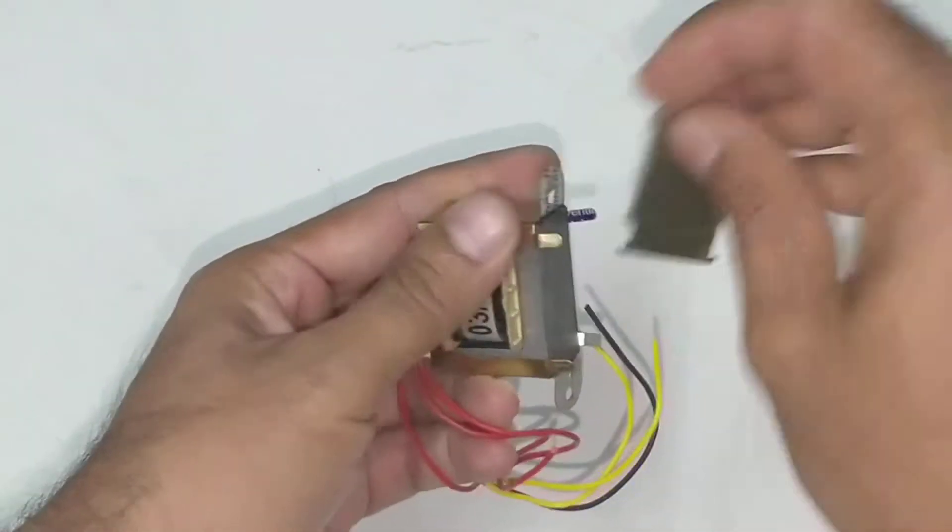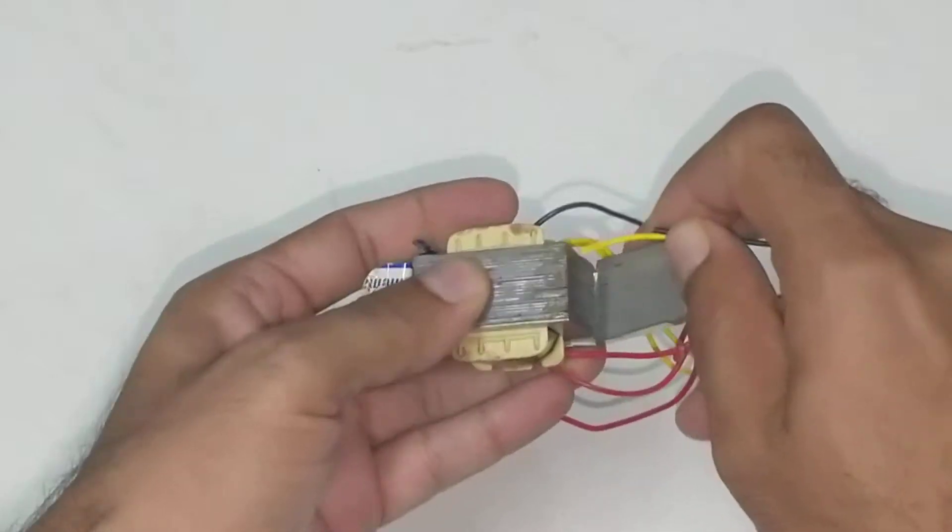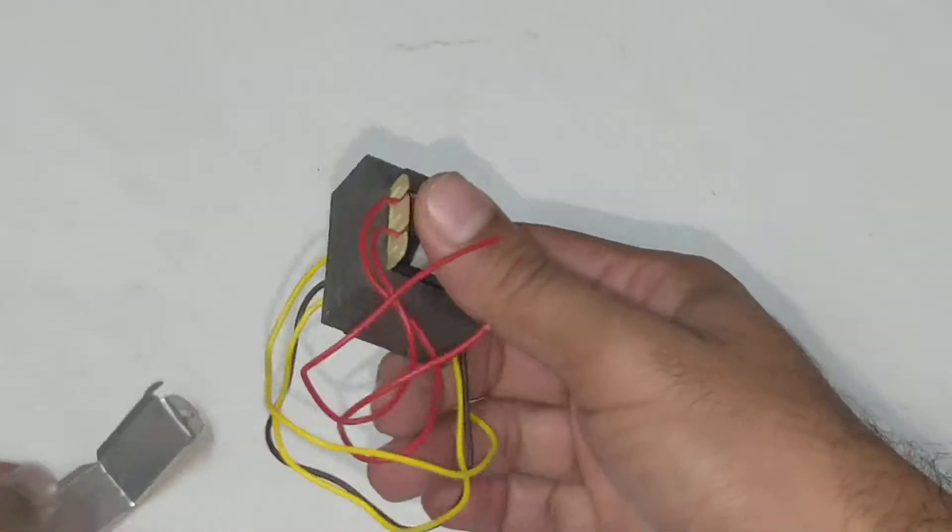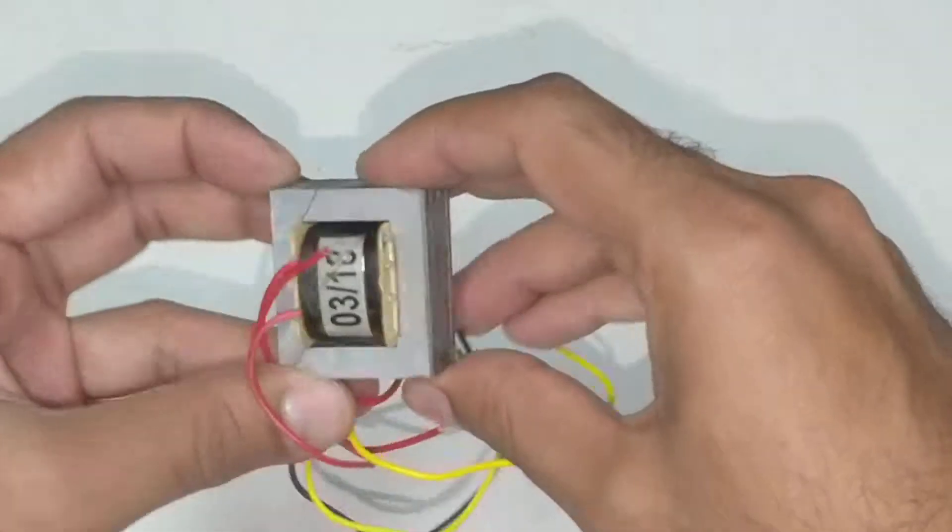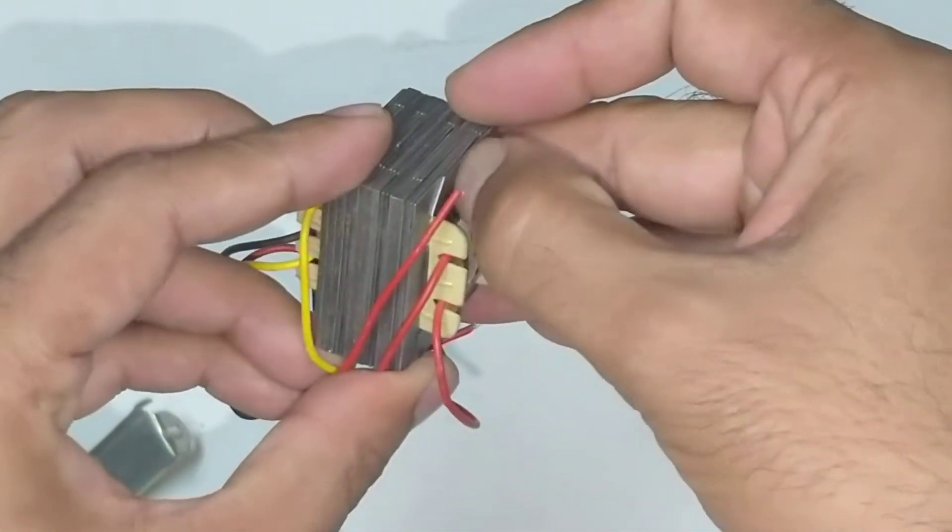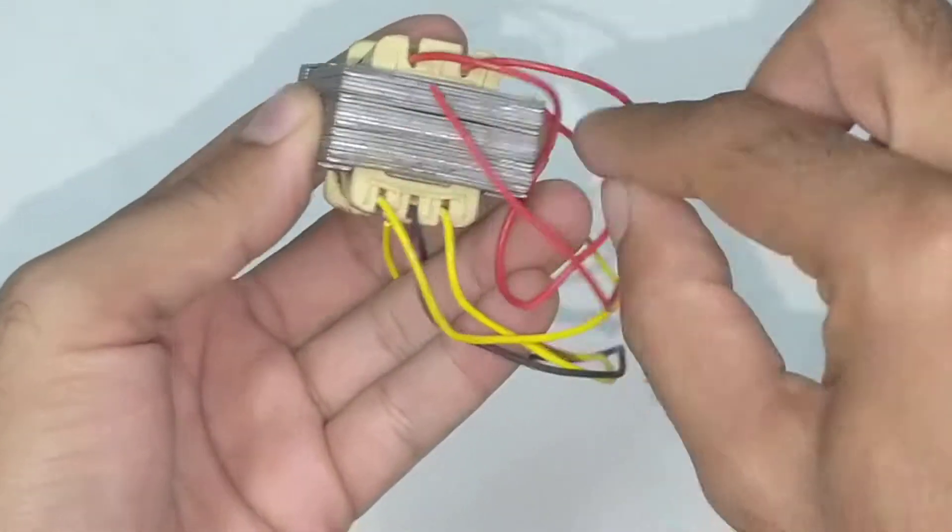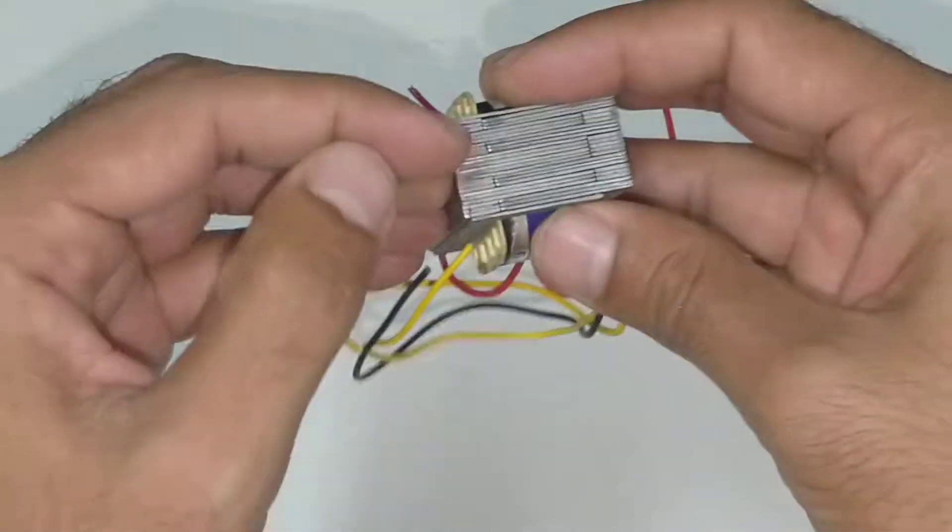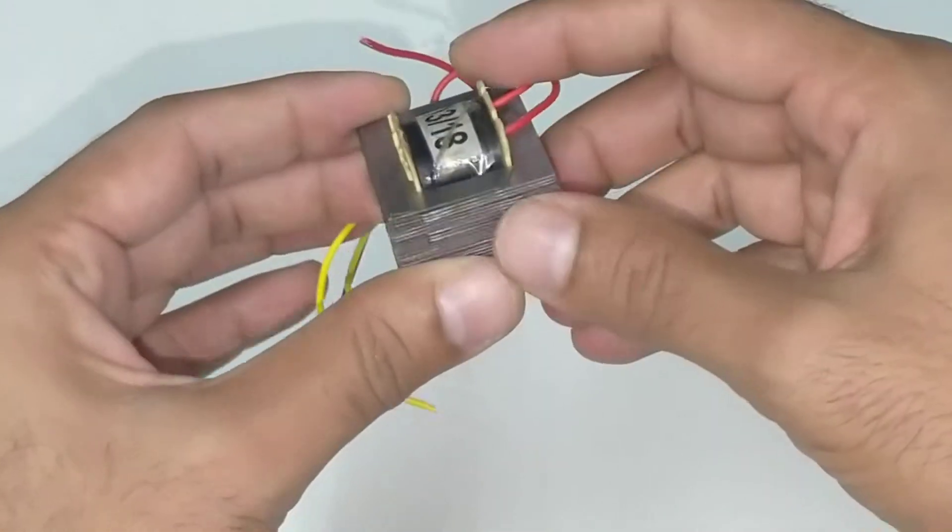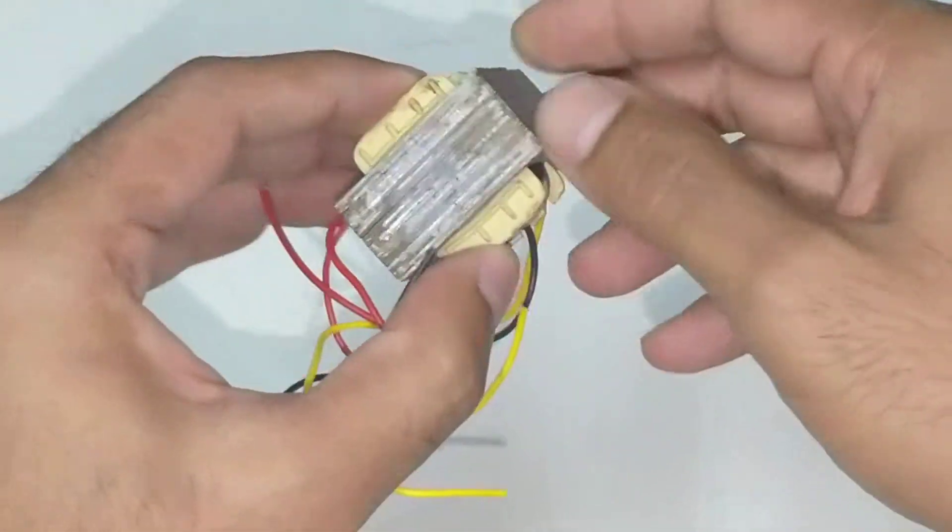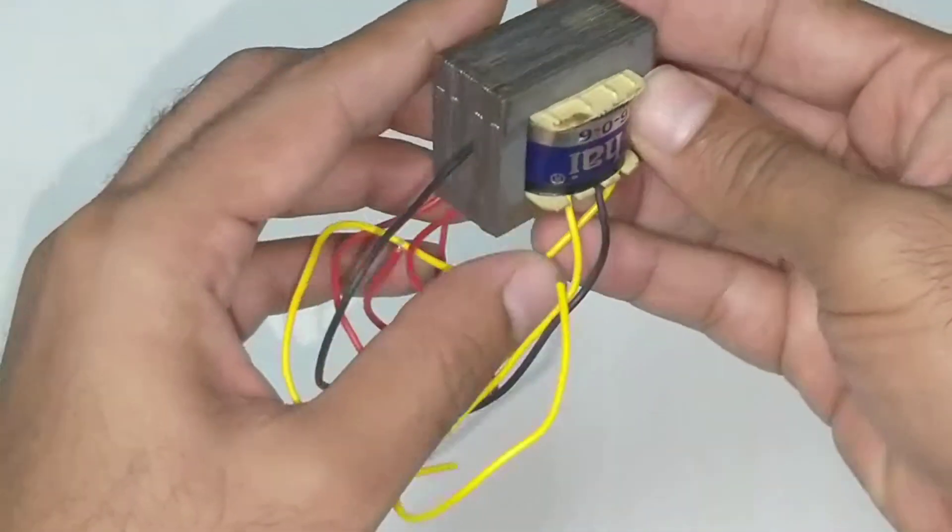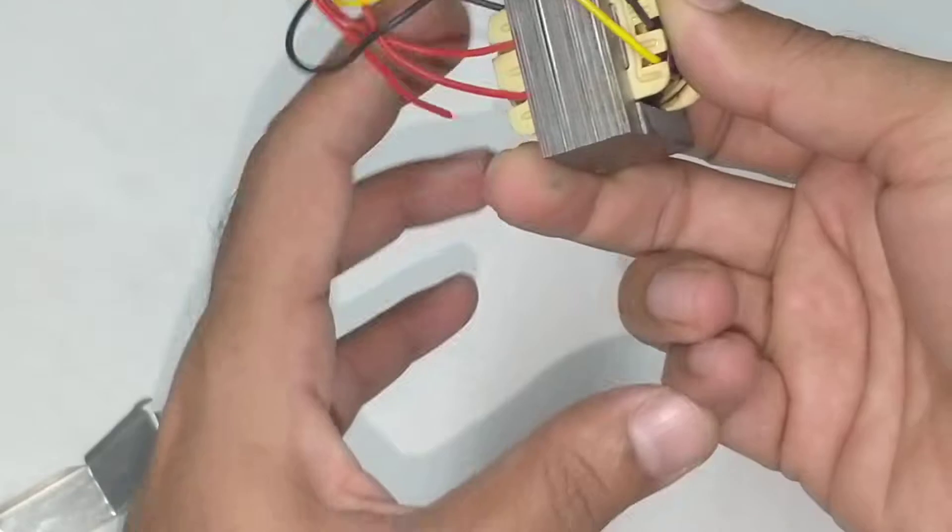So basically, this transformer, how does the construction look? This is the core. You have a lot of small pieces inserted here at this side, primarily done like this to avoid core losses. If they use a solid piece, you have a lot of eddy current losses.